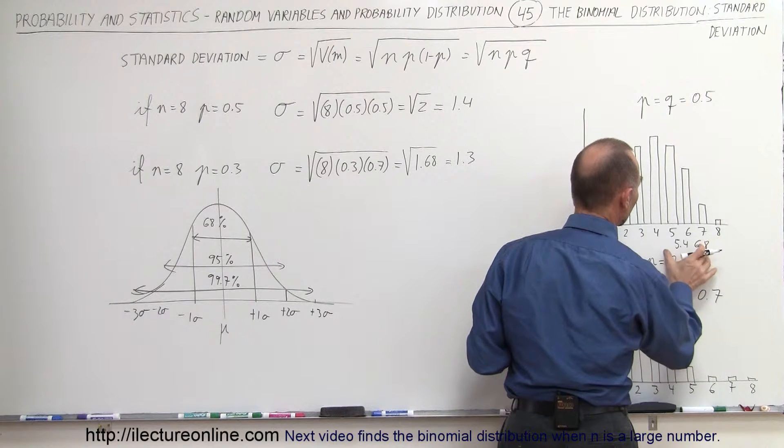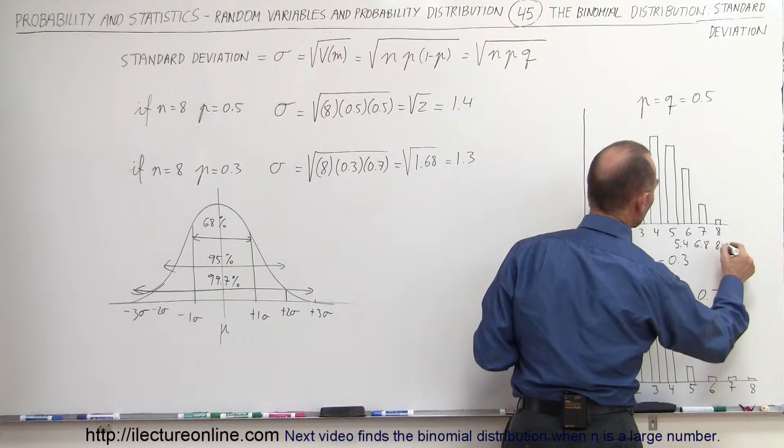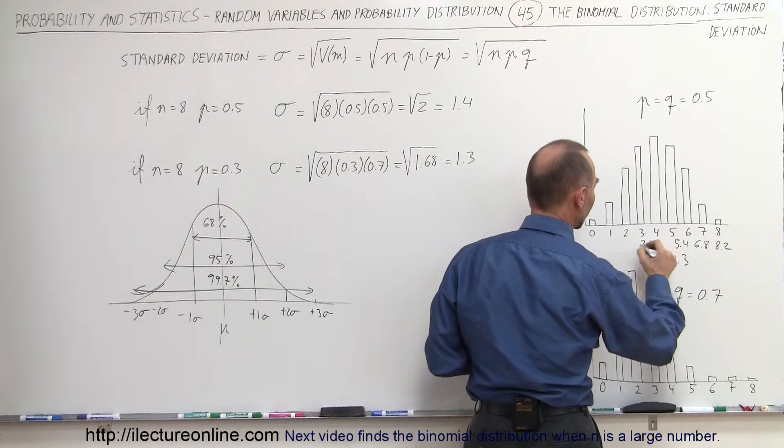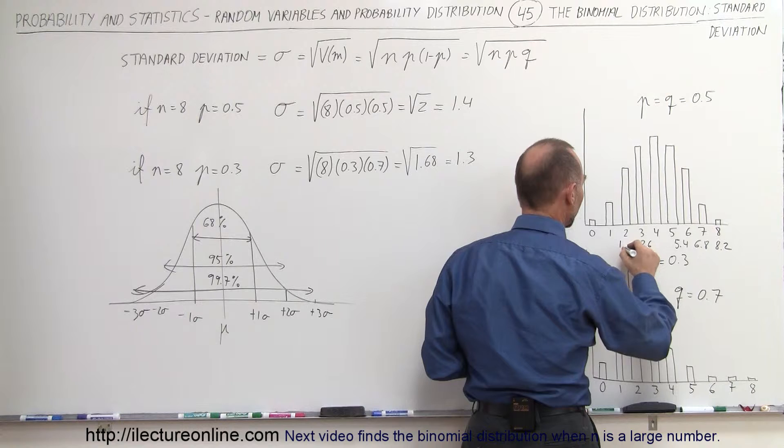On this side it would be 2.6 for minus 1 sigma, it would be 1.2 for minus 2 sigma, and 0 for 3 sigma.